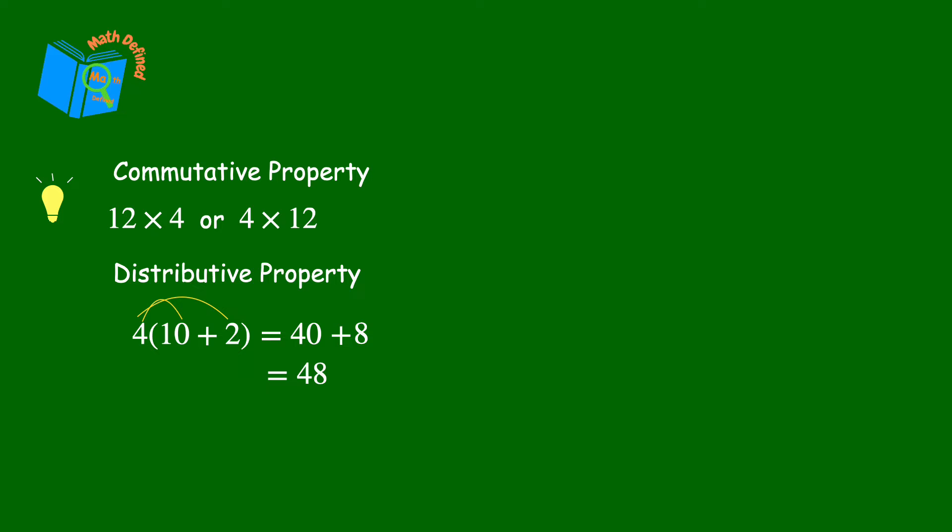To understand why zeros are needed we need to go back and review a couple of things. First, multiplication is commutative which means we can multiply in any order that we choose. Second, you can use the distributive property to multiply one of the factors to the sum of the other factor written out in expanded form.